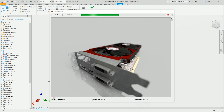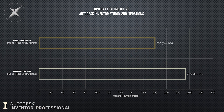Test three: CPU ray tracing in Inventor Studio, 200 iterations. With hyperthreading on it finished in three minutes and 20 seconds; hyperthreading off it finished in four minutes and 13 seconds. This follows all the literature — when you have a workflow that utilizes all cores, like CPU ray tracing, turning off hyperthreading will hurt performance. So if you're doing anything outside of Inventor that uses all cores, disabling hyperthreading is detrimental.